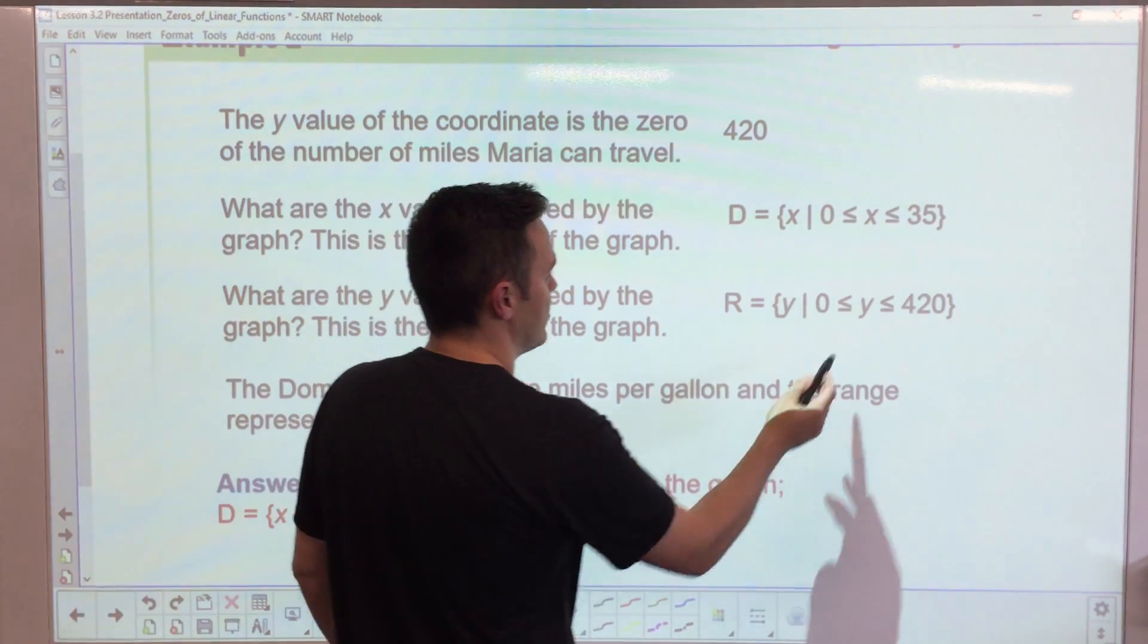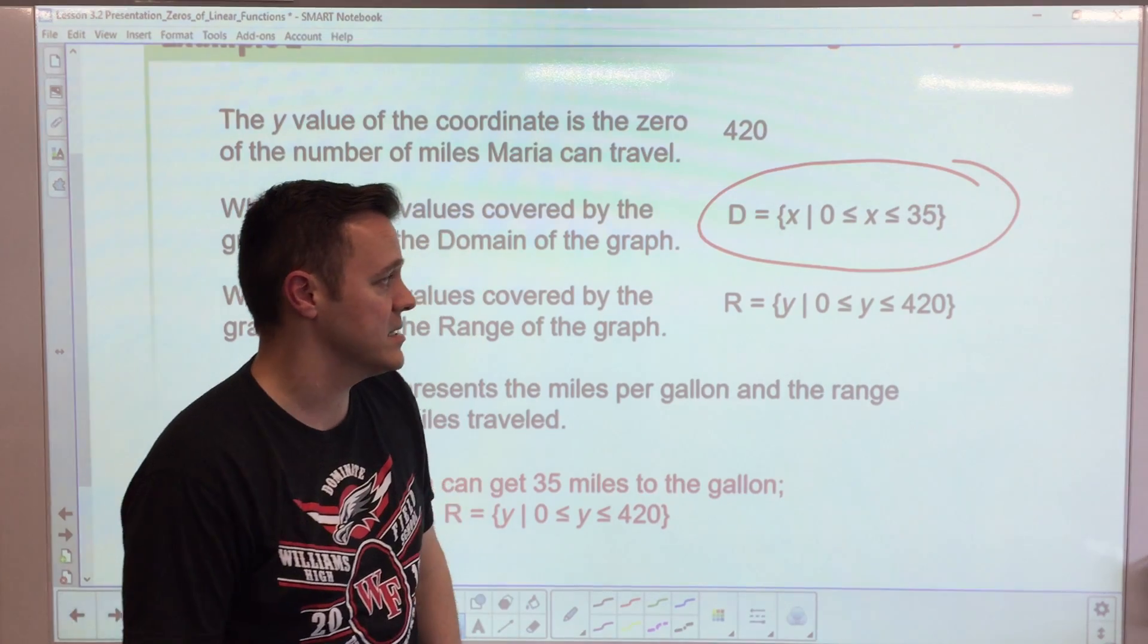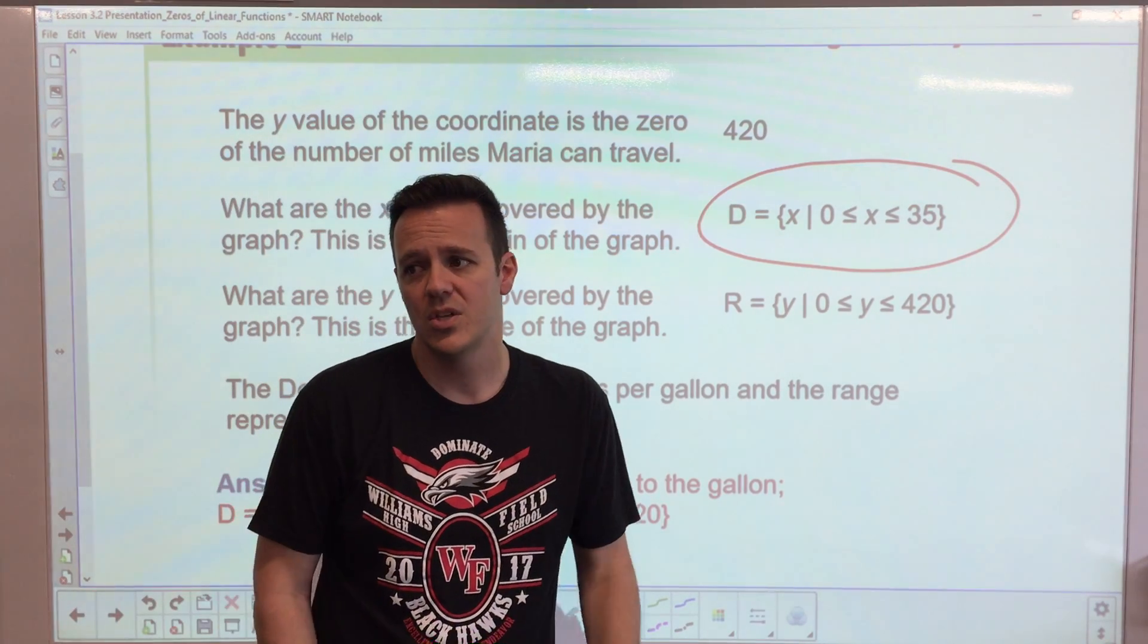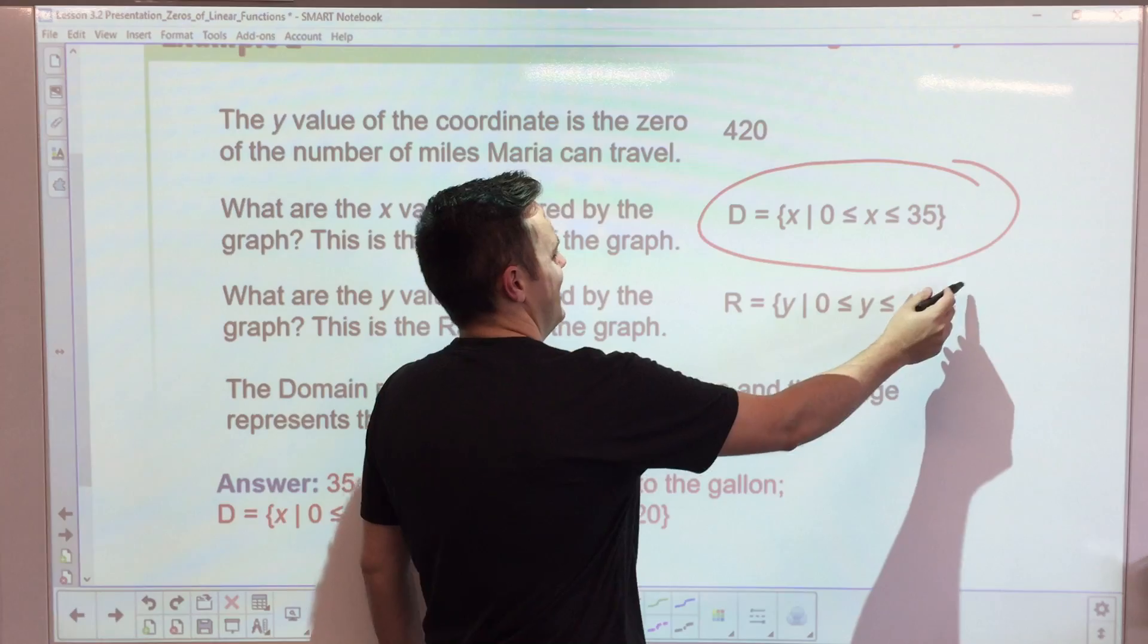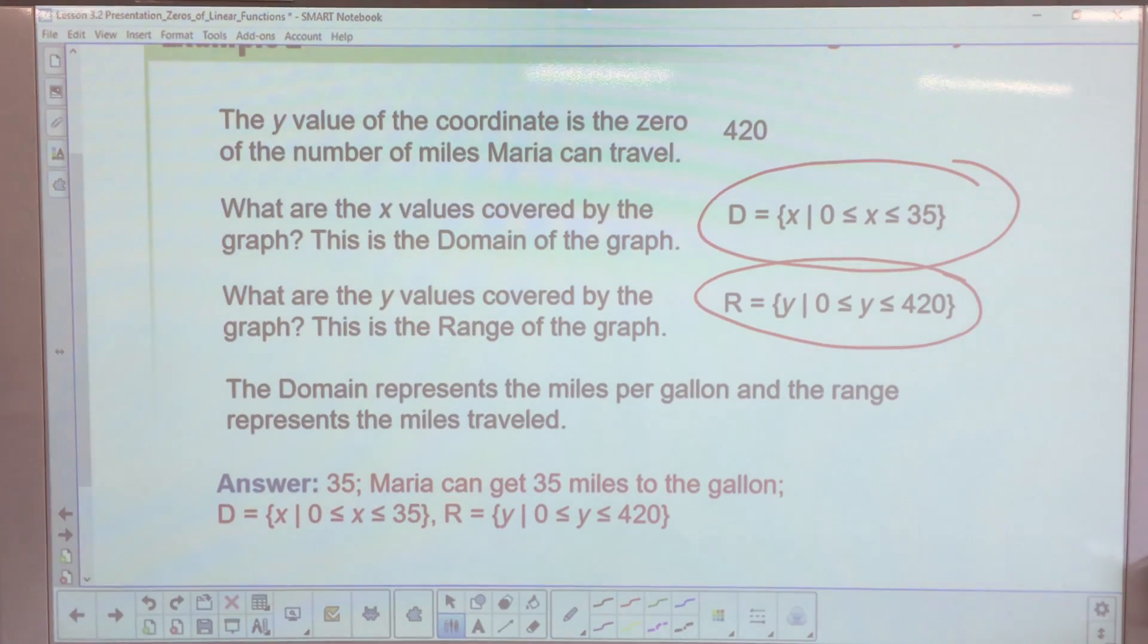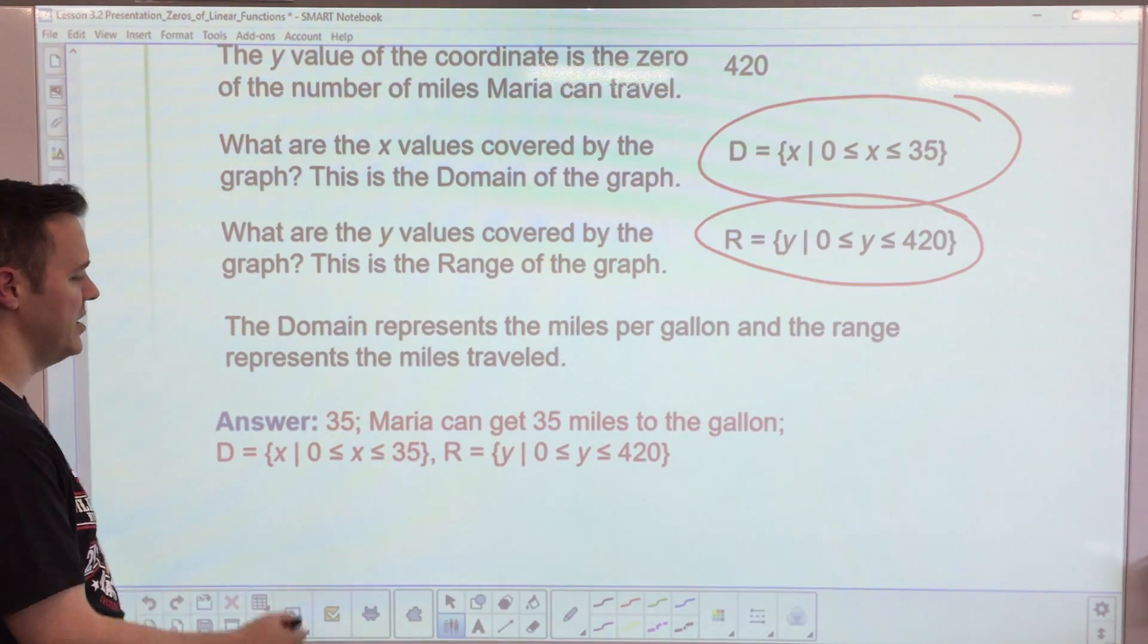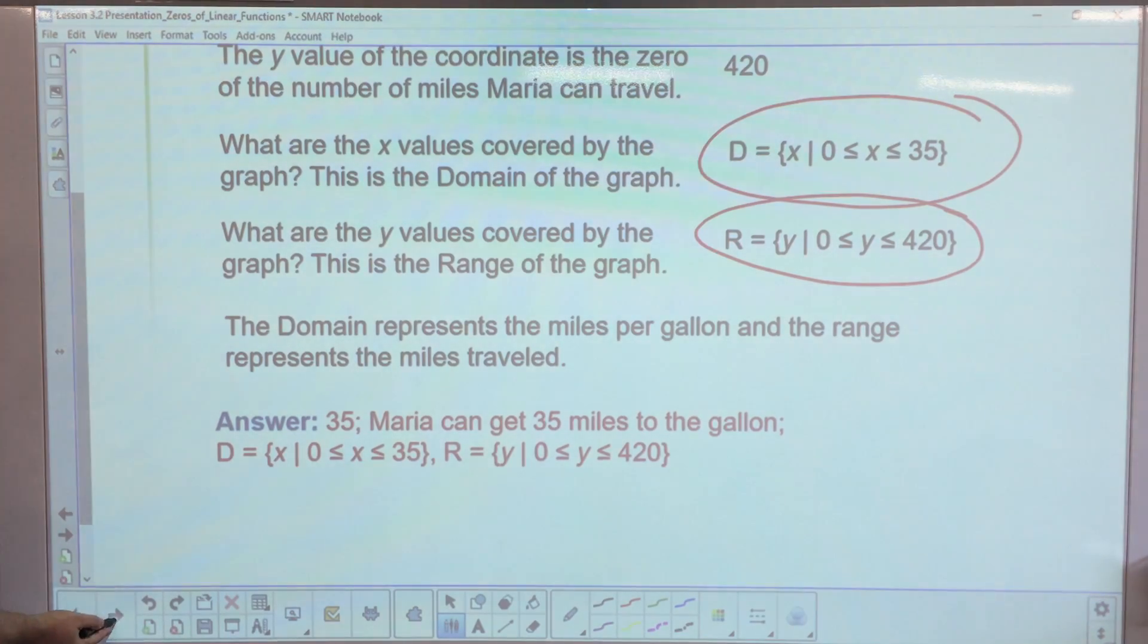The context is that she can go 35 miles per gallon. She starts at 0 and 420, and as she drives she starts to lose gallons of gas in her car. What is the domain and range? Here's the domain and range. I do want you to write in brackets like this. Here is the range. Please make sure you write that down as well.